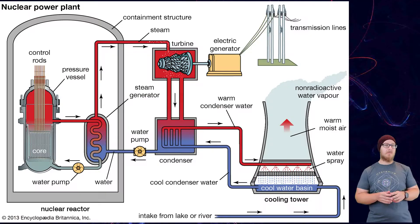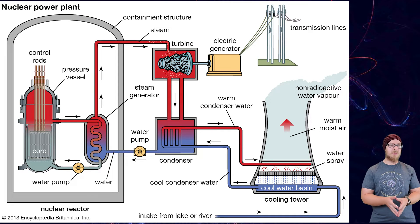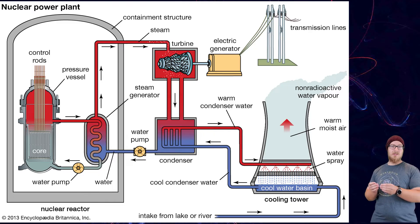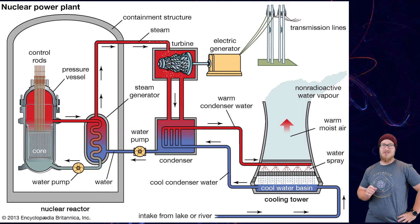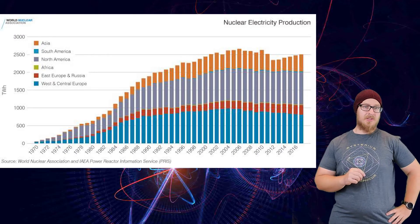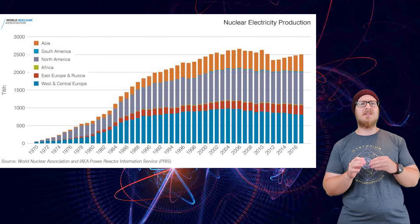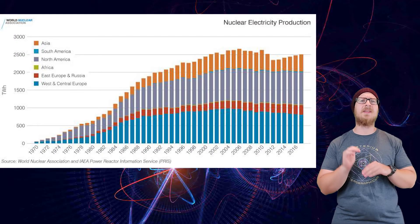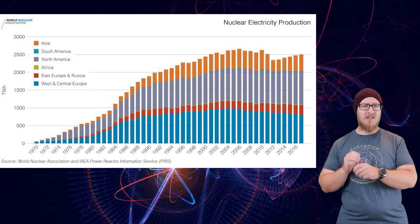The power generation itself is good old-fashioned steam power — the reaction provides the heat, water is converted to steam, and the steam spins a turbine. Even the most modern nuclear power is just steam power. The amount of electricity produced by nuclear power plants steadily increased until the 2000s, then stagnated, and has since begun decreasing.